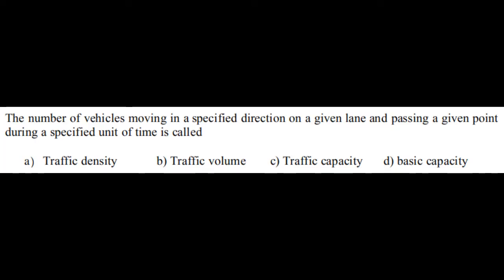Let us see the past year paper. The number of vehicles moving in a specified direction on a given lane and passing a given point during a specified unit of time is called: traffic density, traffic volume, traffic capacity, and basic capacity. The correct answer is option B, traffic volume.